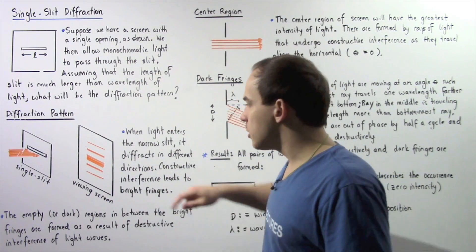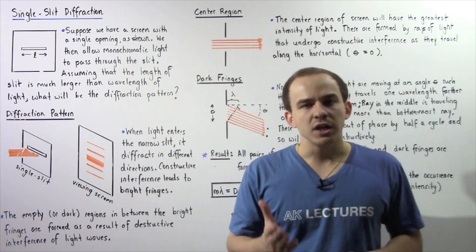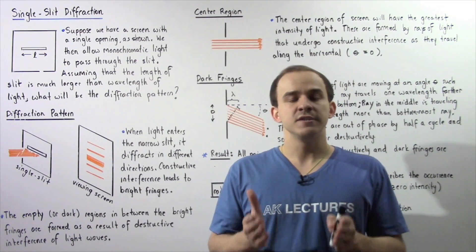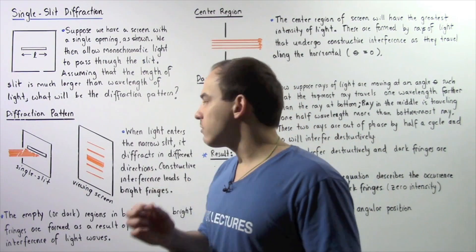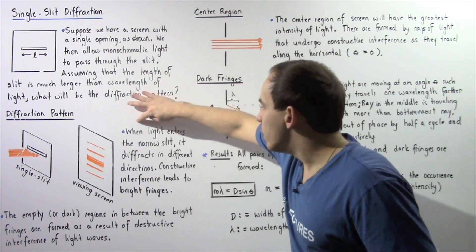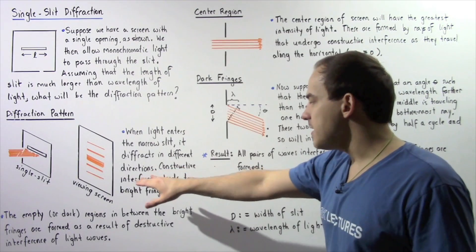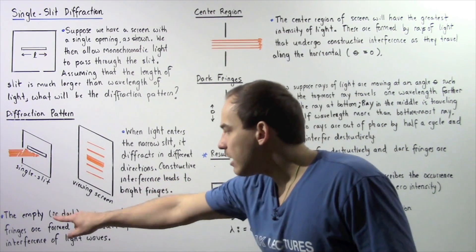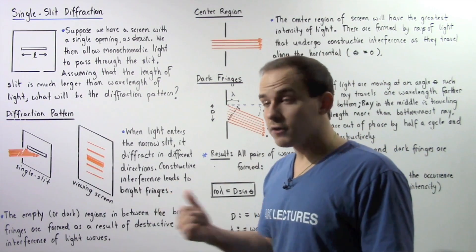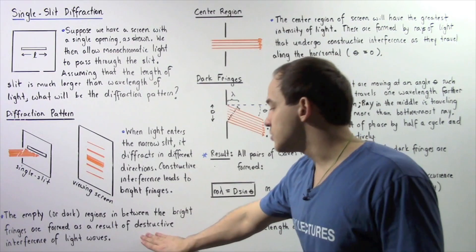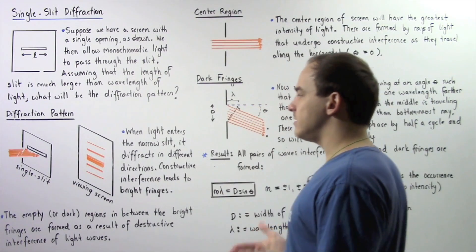The dark fringes which appear in between the bright fringes are formed as a result of destructive interference. Destructive interference takes place when two or more waves meet that are exactly out of phase. So when light enters the narrow slit, it diffracts in different directions. Constructive interference leads to bright fringes, and the dark regions in between — the dark fringes — are formed as a result of destructive interference of the light waves passing through the single slit.